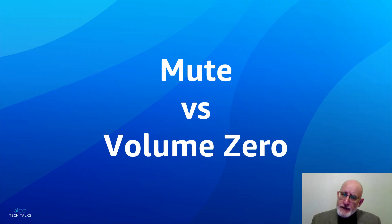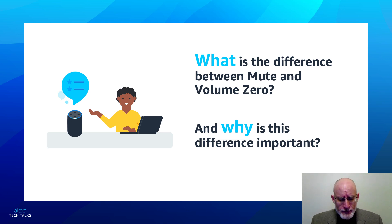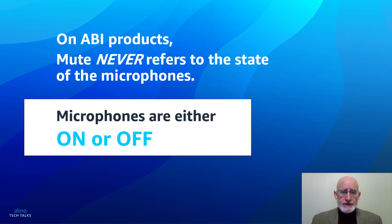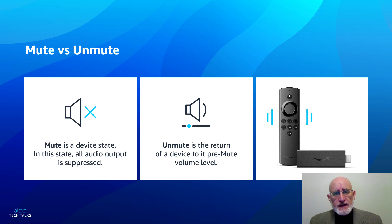Speaking of mute, let's talk about mute versus volume zero. What's the difference between mute and volume zero? You can't hear anything, so why does that make any difference at all? Why is the difference important? Well, on an ABI product, mute never refers to the state of the microphones. That needs to be clear not only to all developers, but also to users of Alexa built-in products. Microphones are either on or they are off. Mute is a device state. In this state, all audio output is suppressed. Regardless of what the previous volume level was, the moment you mute that device, audio output has been set to nothing.